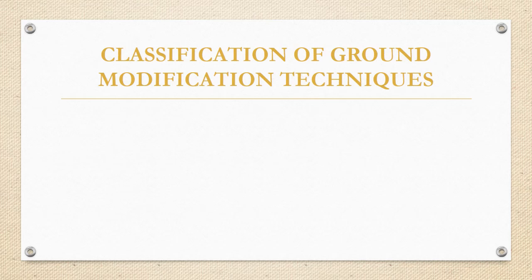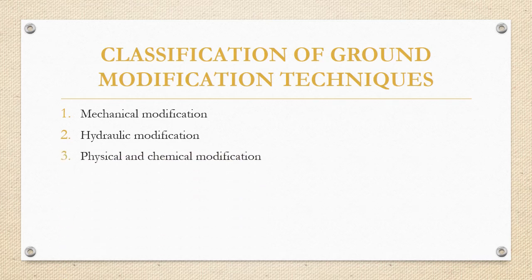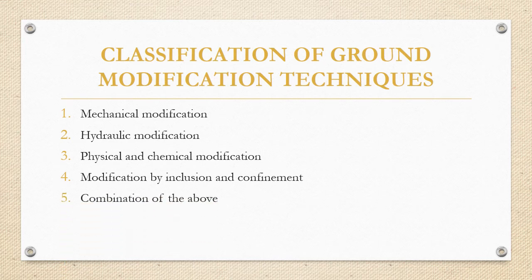The classification of ground modification techniques includes: mechanical modification, hydraulic modification, physical and chemical modification, modification by inclusion and confinement, and combinations of the above. Mechanical modification refers to compaction — done with the help of rollers or timbers — including shallow compaction by rollers and deep compaction methods such as vibro compaction, vibro replacement, and stone columns.